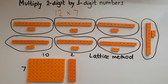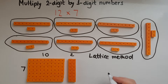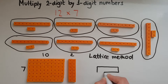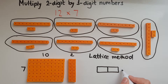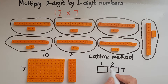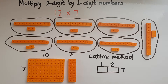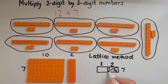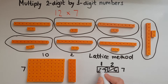The lattice method works in a very similar way to the grid method. I'll again draw a simple grid with two numbers at the top and one number on the side. So I've got 12 times 7. The difference is that I write 12 as I would normally — not separating it into 10s and units. So I do 2 times 7 which is 14, and I separate the 10s and units. Then 1 times 7 is 7, so that's 0 tens and 7 units.